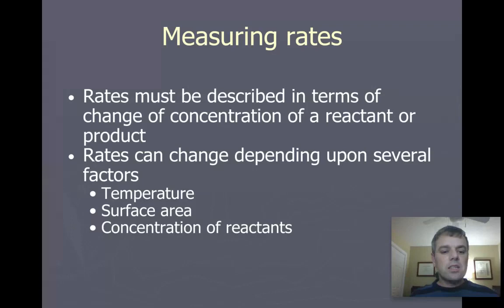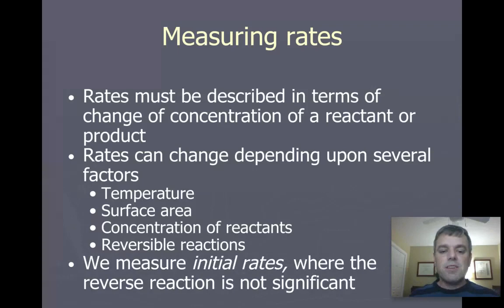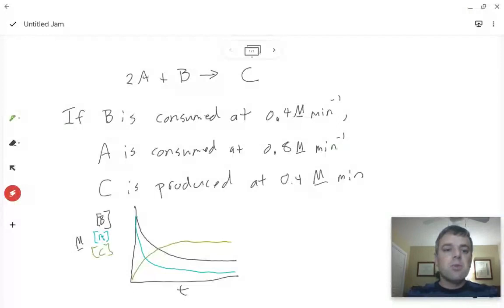The other thing that does come into play is reversible reactions because as the reaction starts proceeding in the forward direction, if it's reversible, that's going to affect the perceived rate of the reaction. So what we do is we measure what are called the initial rates where the reverse reaction isn't really significant.